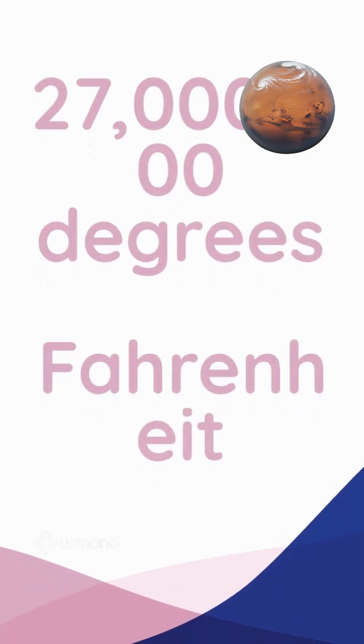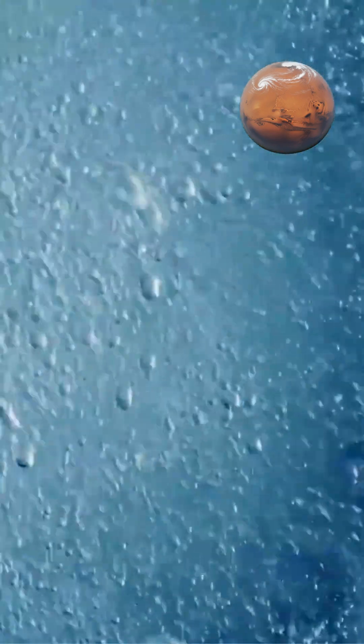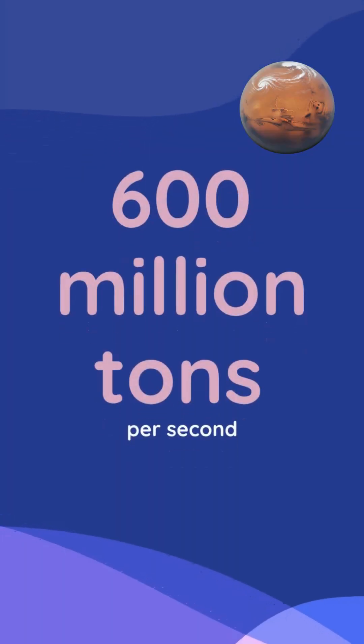Temperatures in the Sun's core reach approximately 27 million degrees Fahrenheit, creating extreme conditions necessary for nuclear reactions that convert hydrogen into helium at a rate of approximately 600 million tons per second.